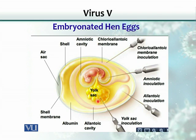Some viruses like to grow in the yolk sac. Some grow on the membrane called the chorioallantoic membrane. Some grow in the cavity called the allantoic cavity, and some even grow in the cavity called the amniotic cavity.